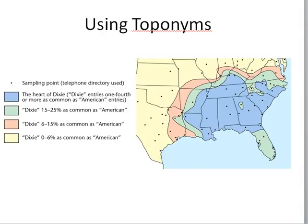The map of regions of Dixie was created using toponyms — names of cultural features that carry some meaning, like an event or battle such as Battle Creek, Michigan, or a famous person like Mount Washington. By using a telephone directory to find how many businesses used the word 'Dixie,' this map was created. The more the word was used, the more it identified the heart of Dixie. That's how toponyms were used to create vernacular regions.